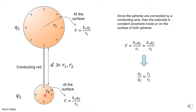Since this is all one huge connected conductor, every single point on it — whether here or here — must be at the same potential. That means the potential at the surface of the large sphere is exactly the same as the potential at the surface of the small sphere. So kQ1/R1 equals kQ2/R2, and when you equate these, k cancels and you get the relationship Q1/Q2 equals R1/R2.